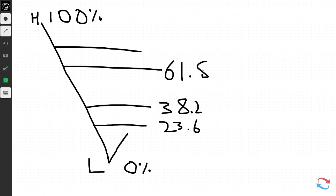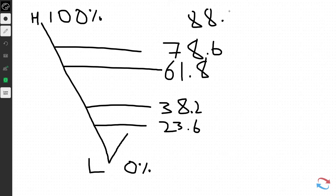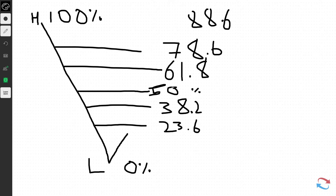Then 61.8 and 78.6. There are other Fibonacci numbers derived, like the 88.6, and there is a 50% level. Strictly speaking, the 50% level is not actually a Fibonacci number, although many traders do use it. These are the main ratios. In a down move, prices would retrace back to certain levels and traders would be looking to get short at any of those levels.